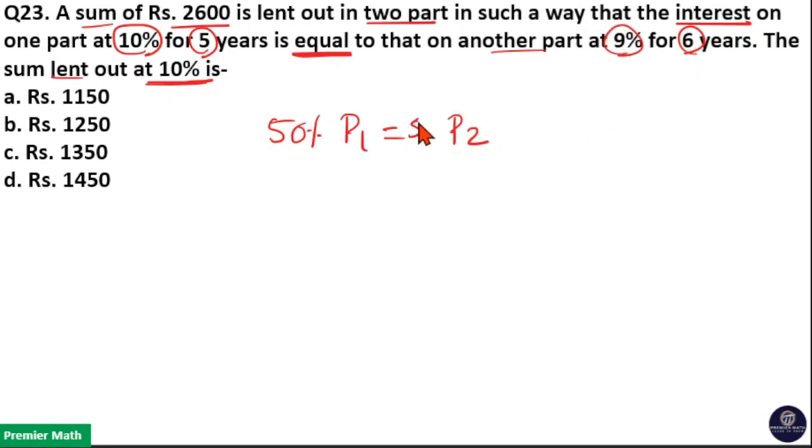Now 50% of principle 1 is equal to 54% of principle 2. If I cancel percentage and divide it with 2, 2 goes 25 times in 50 and 2 goes 27 times in 54. Now principle 1 by principle 2 is equal to 27 by 25.